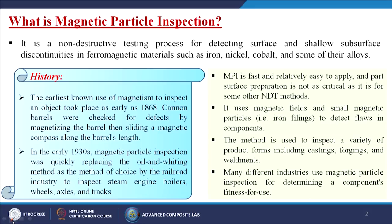It is a testing process for detecting surface and shallow surface discontinuities in ferromagnetic materials. This is the vital point: ferromagnetic materials such as iron, nickel, cobalt and some of their alloys.